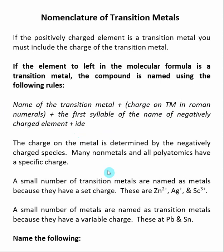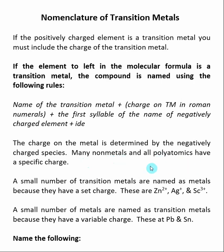How we determine the charge on the transition metal is by looking at the negatively charged species that it is attached to. Remember that many non-metals, which typically have a negative charge, and all polyatomics have a specific charge. We will be looking at any non-metals or polyatomics attached to the transition metal to determine the charge on the transition metal.